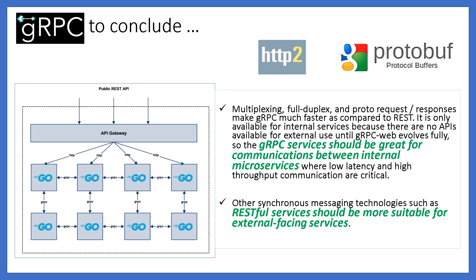After seeing the features of the gRPC framework and protobuf benefits, you might now understand when to choose the gRPC style to fit your business or solution requirements. On a high level, multiplexing, full duplex, and proto request-responses make gRPC much faster compared to REST. It is only available for internal services because there are no APIs available for external use until gRPC-web evolves fully, so gRPC API design should be great for communications between internal microservices where low latency and high throughput are critical.